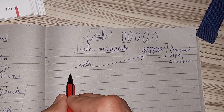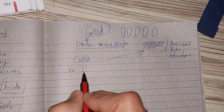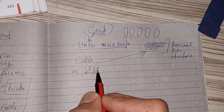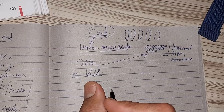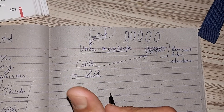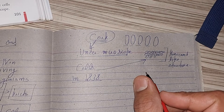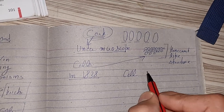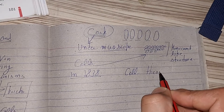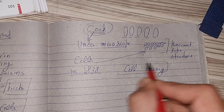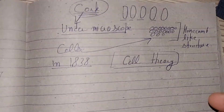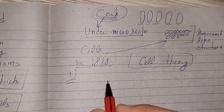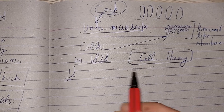In 1838, as discoveries continued, two scientists — Schleiden and Schwann — continued the research of Robert Hooke, and cell theory was given. Cell theory came into force. They gave a cell theory. What does cell theory say? All living organisms are made up of cells.